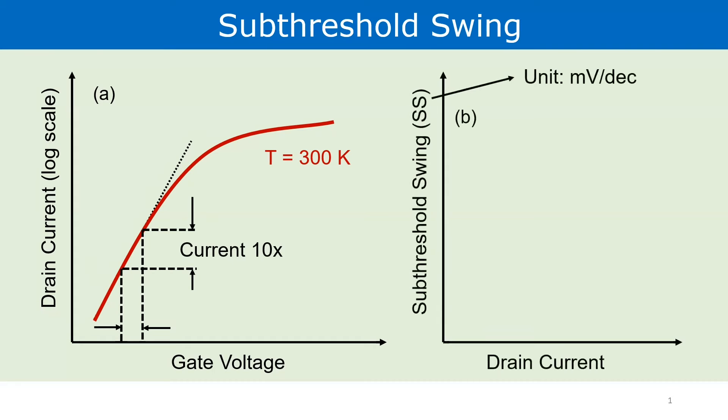It is expressed in millivolts per decade and we ideally want it to be zero. Meaning above a certain voltage, called the threshold voltage, the current should shoot up to its maximum and it should be zero for voltages lesser than the threshold voltage. That means a sharp turn-on characteristic at the threshold voltage.